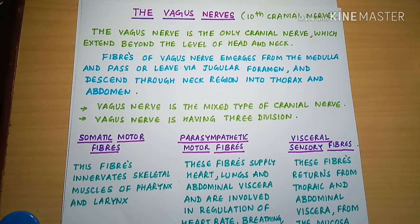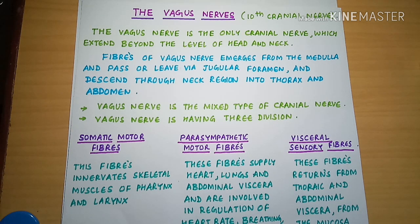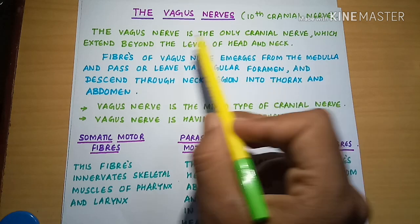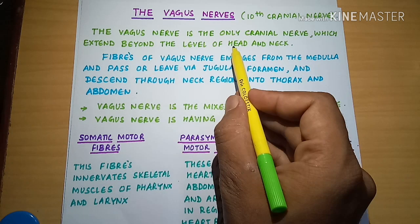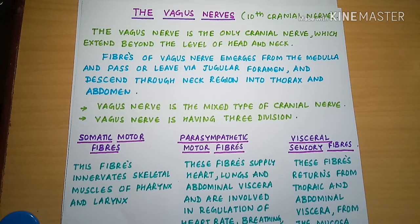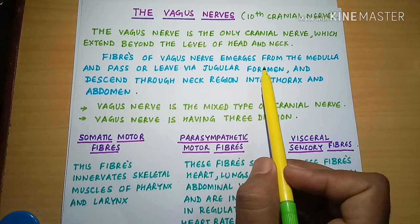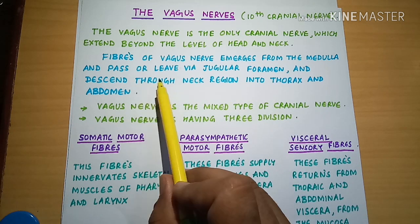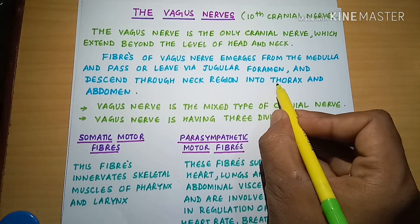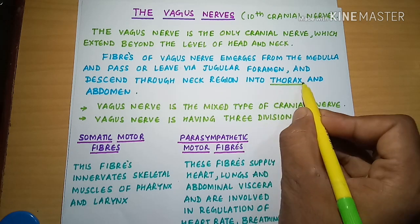The Vagus Nerve is the only cranial nerve which extends beyond the level of head and neck. All other cranial nerves are limited to the cranial region only. Fibres of the Vagus Nerve emerge from the medullary aspect, pass through the jugular foramen, and descend through the neck region into the thorax and abdomen.